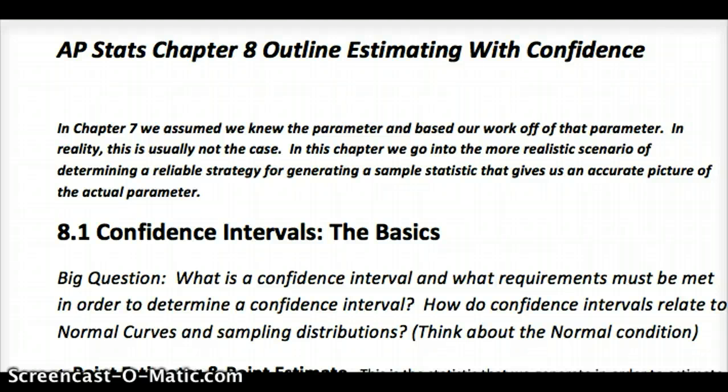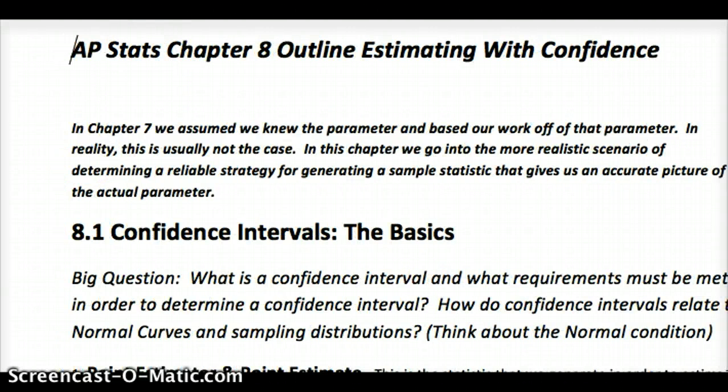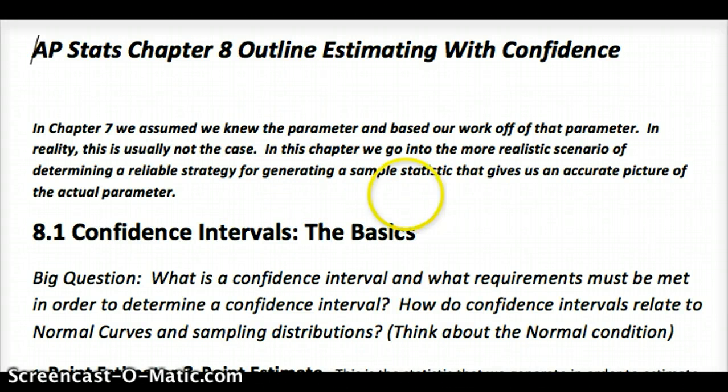A key thing for these is that in Chapter 7 we talked about sampling distributions when we knew the parameter and based our work off of that parameter, so you guys could get an idea of what the rules are and how it works and the patterns as the sample size n increases. When we're really trying to figure things out, we rarely know the true parameter. We're usually trying to use our sample statistic in order to determine the parameter.